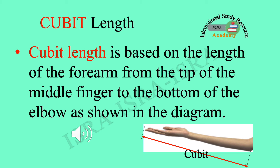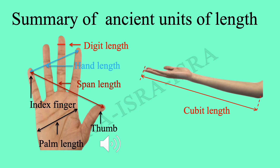Cubit length is based on the length of the forearm from the tip of the middle finger to the bottom of the elbow, as shown in the diagram.